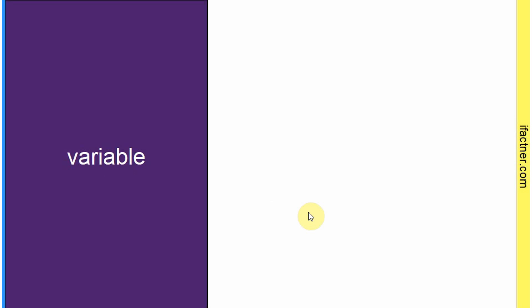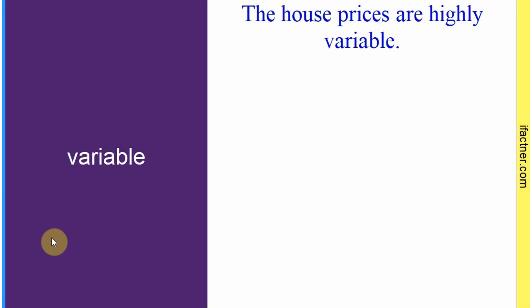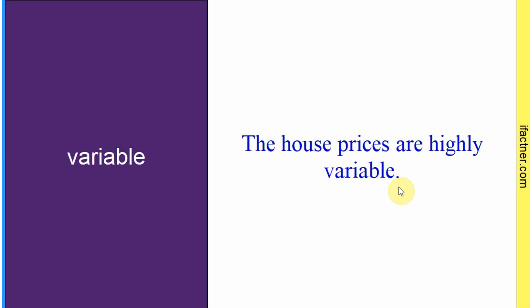Word hai: 'variable'. Sentence banaate hain meaning samajhne ke liye: 'The house prices are highly variable.' Jo gharon ki qeemat hain woh bahot zyada ghair mustaqil hain — jo cheez change hoti rehti hai, koi value change hoti rehti hai, woh 'variable' hoti hai. Jo ghair mustaqil ho use hum 'variable' kehte hain. Sentence banaaya: 'The house prices are highly variable.'